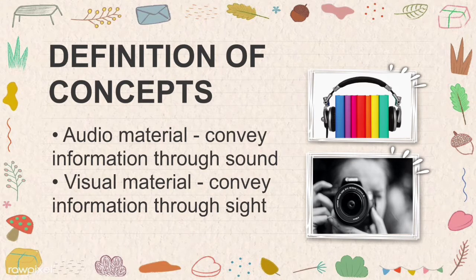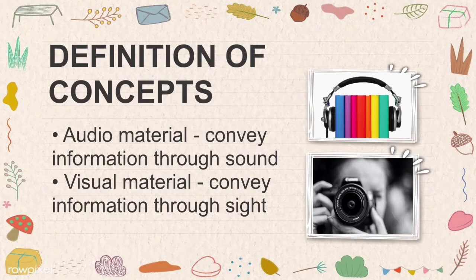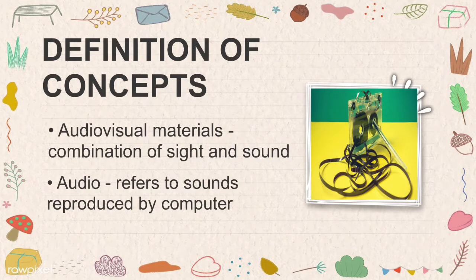talking books, and other sound recordings. Visual materials are tools to convey information through sight. This type of material is transmitted visually and not through any verbal or textual definition; rather it communicates through what is depicted and how it is depicted. It encompasses a wide range of forms including photographs, cinema, video films,